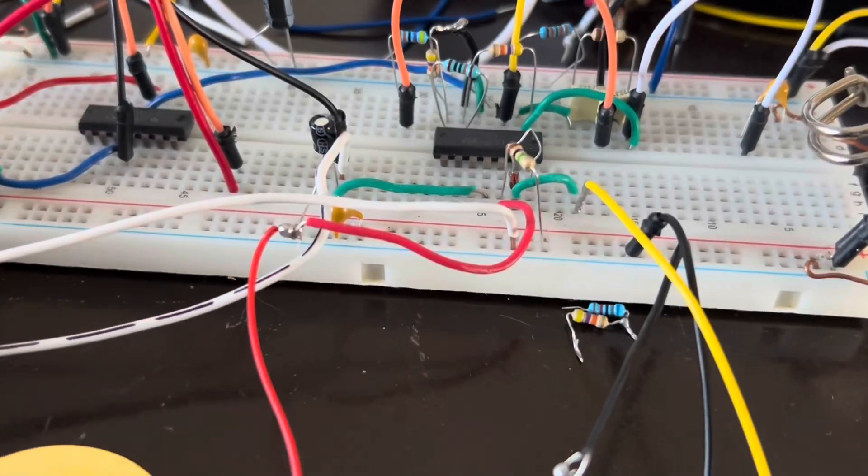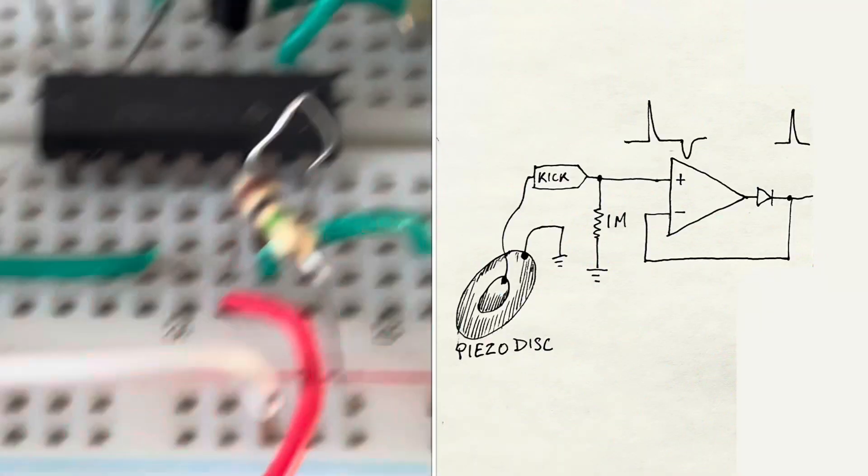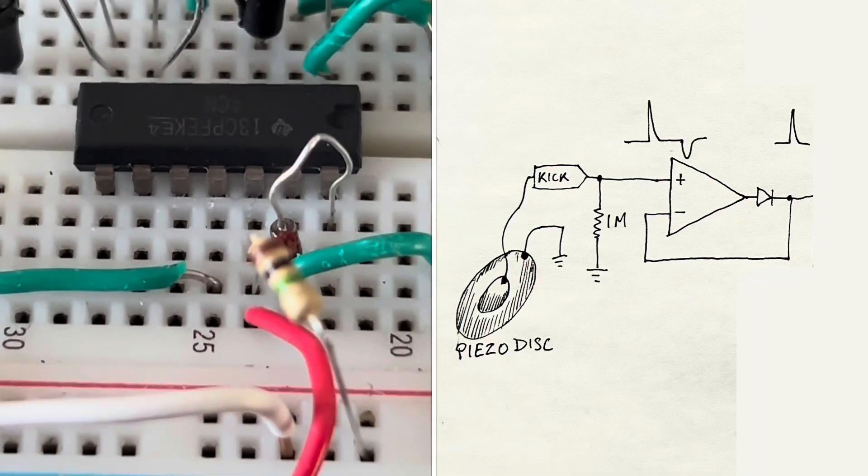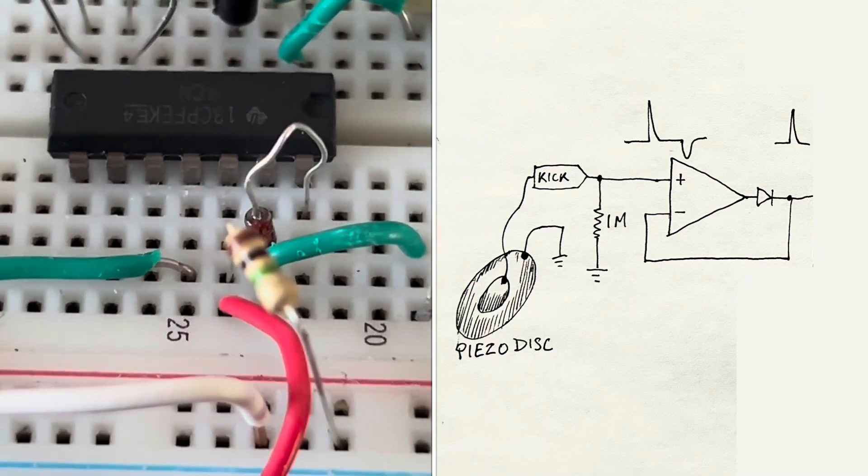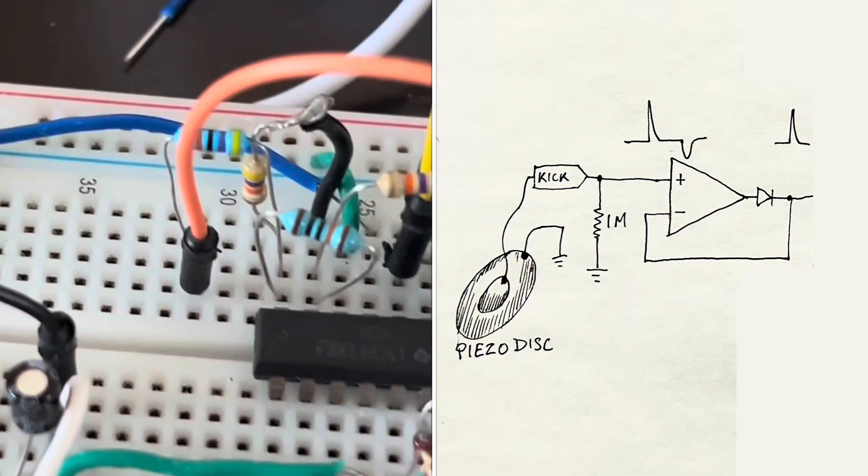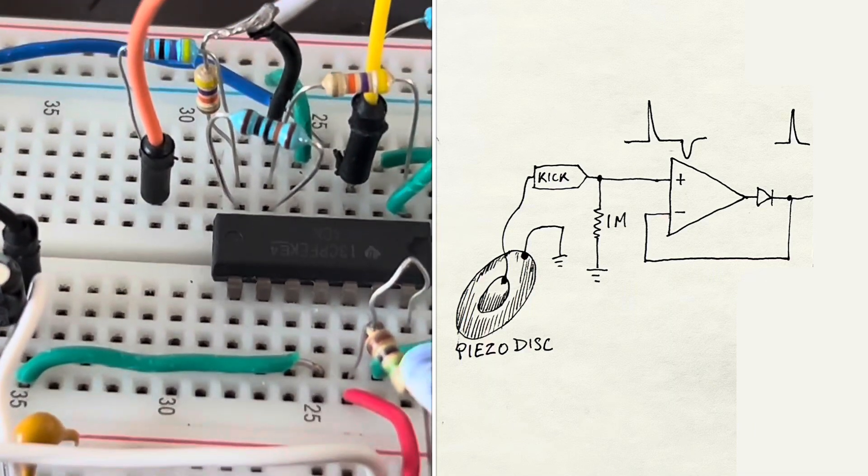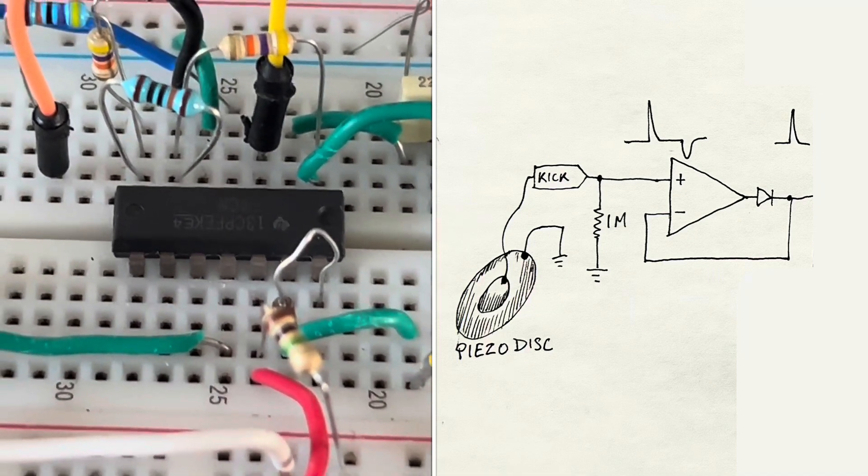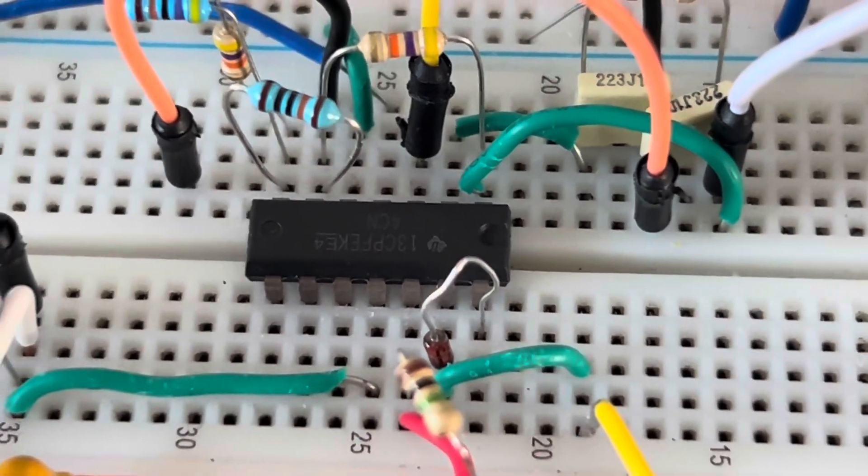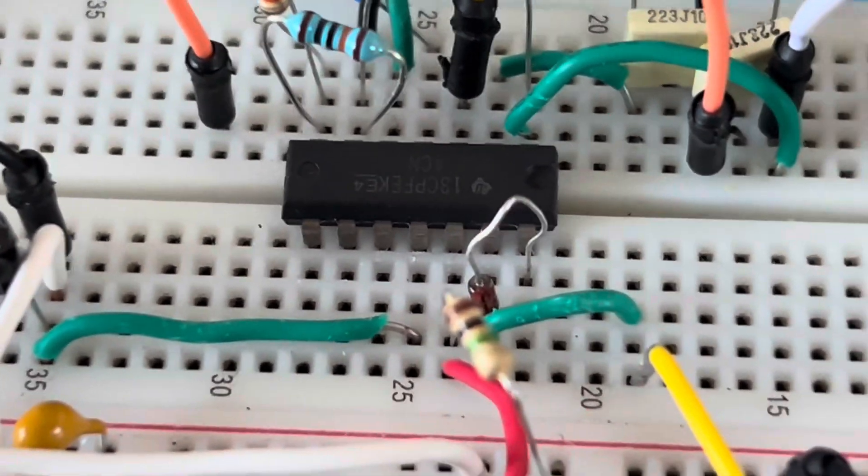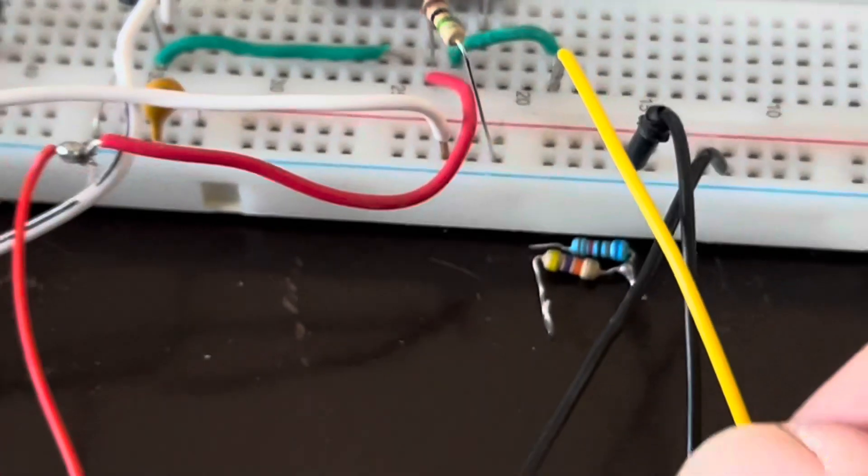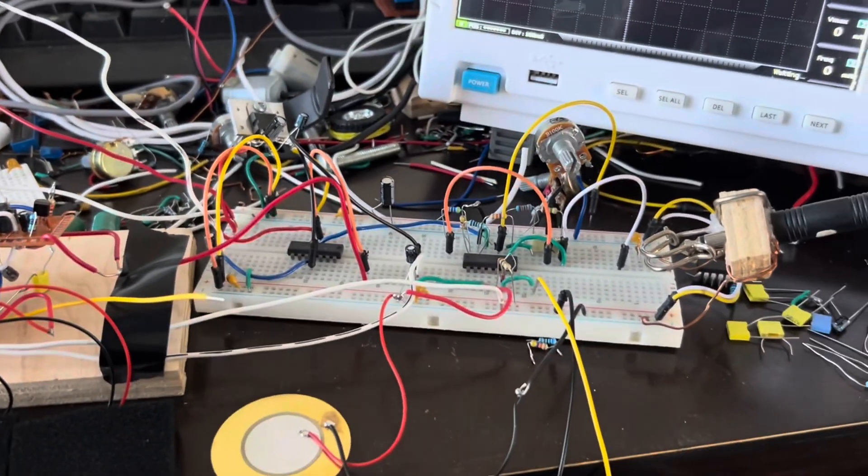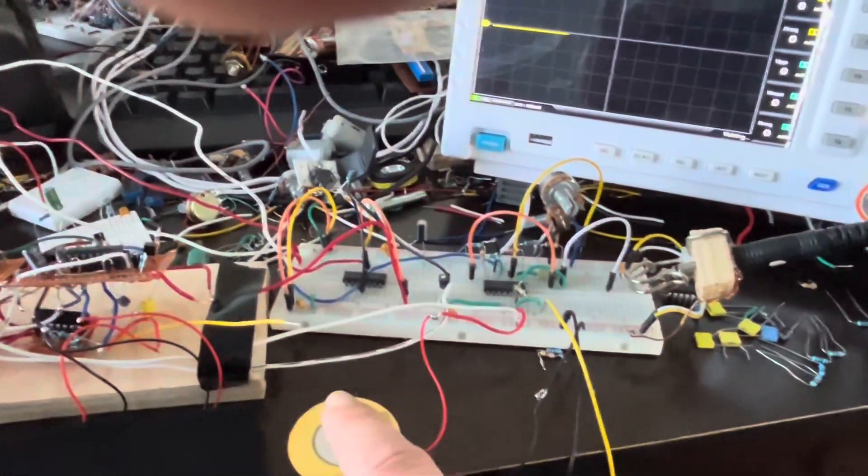Now if we take that voltage and put it through a diode right there, this is a diode going in from the output to the inverting input, and you put a large resistor, one megaohm resistor to ground at the non-inverting input, and you take the output from the downstream of the diode, basically from the inverting input output. And this is our oscilloscope probe right here. And if you tap on the disc, you get a positive going spike.